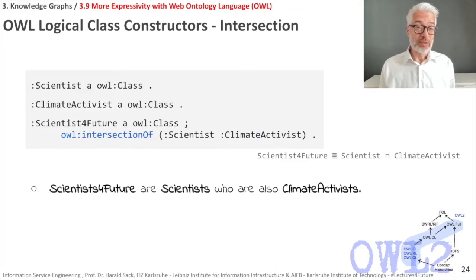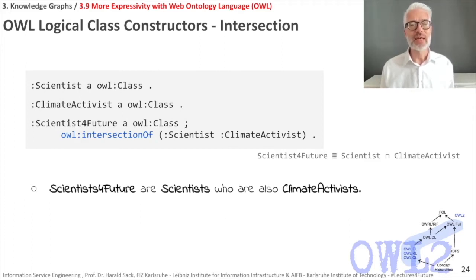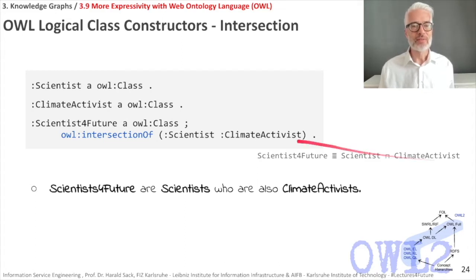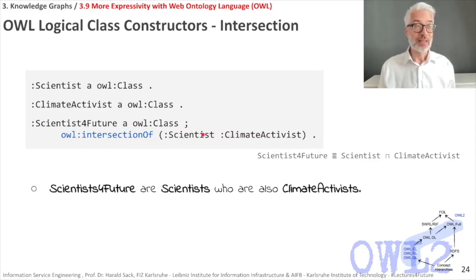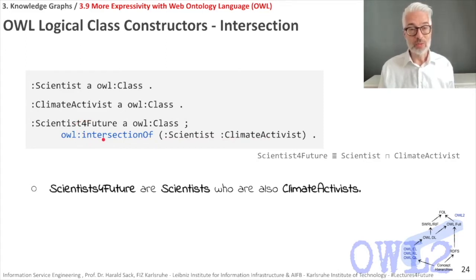Starting with an intersection example: we define Scientist and ClimateActivist as OWL classes. Then we define ScientistsForFuture as the intersection of these two. In Turtle, ScientistsForFuture is declared as an OWL class using the keyword 'intersection of', followed by a list containing Scientist and ClimateActivist — forming a complex class with that name. This can also include more than two classes.